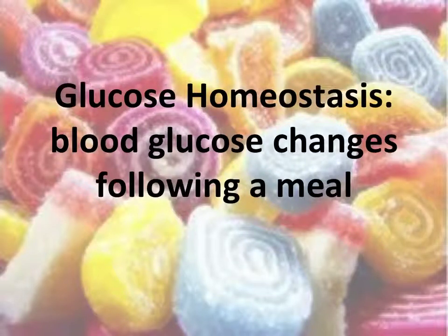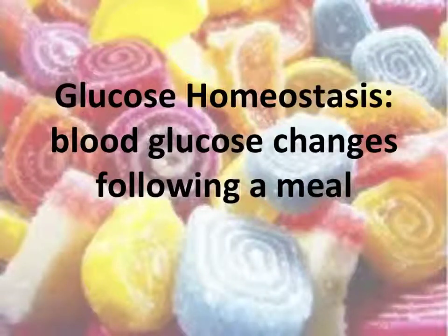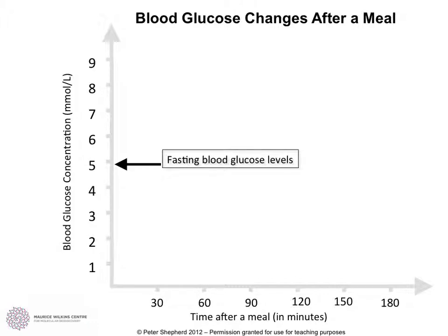This next video is going to look at how blood glucose changes after a meal. In particular, we're going to look at the effects and actions that insulin and glucagon have on blood glucose after a meal. We're going to use this graph to follow through a period of time following intake of a meal. On the y-axis we're looking at blood glucose levels or concentration, measured in millimoles per litre, and along the x-axis we're looking at how long it's been in minutes after a meal.